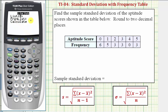Next we have to enter where the frequency is located, so we press the down arrow or enter. The frequency list is L2, so we press second two. And again we can press down or enter, and then enter on calculate.